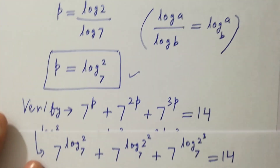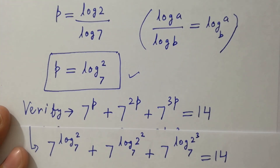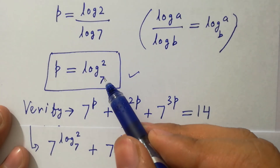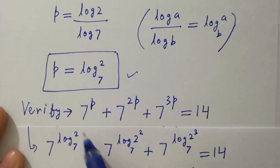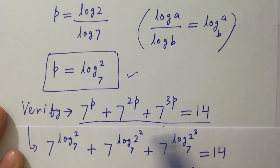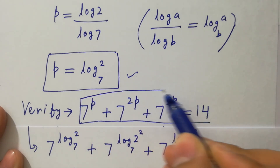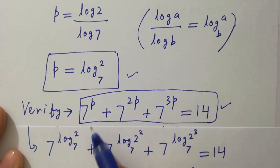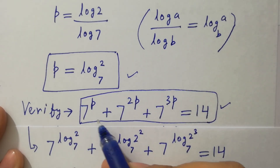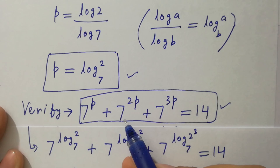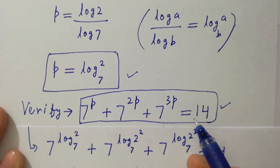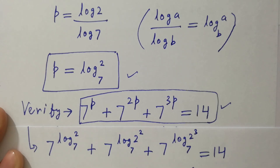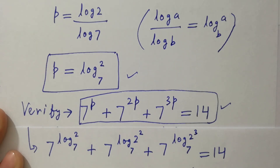This shows that the value of p equal to log 2 to the base 7 satisfies the equation 7 to the power p plus 7 to the power 2p plus 7 to the power 3p equal to 14. Thanks for watching this video, please subscribe to the channel to get notifications of new videos.